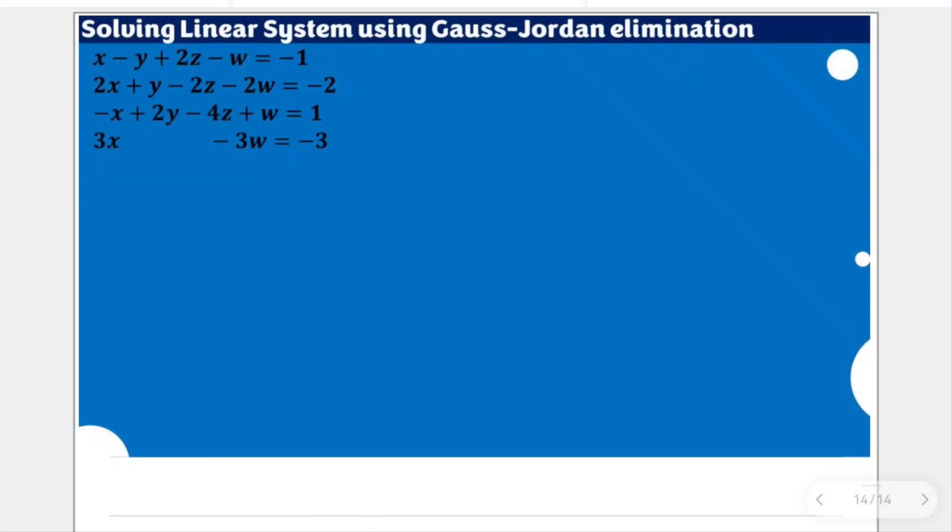Let us now apply the Gauss-Jordan elimination in solving for this given linear system. So we have the variables x, y, z, and w, and we are going to look for the values, if there are exact values, or representations if there are no exact values for the set of variables. But if you were going to check with this,